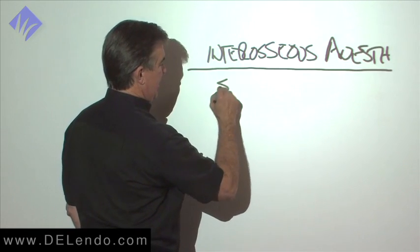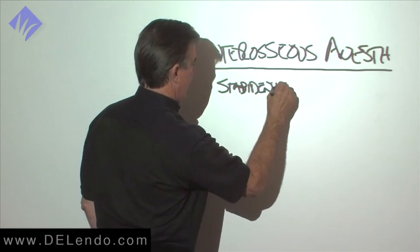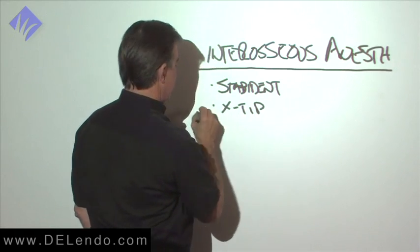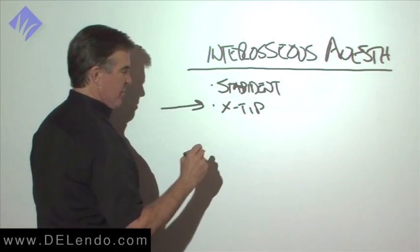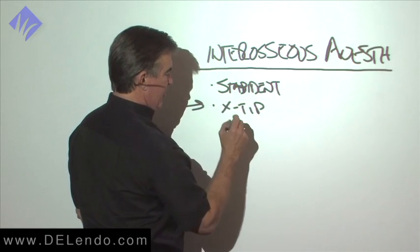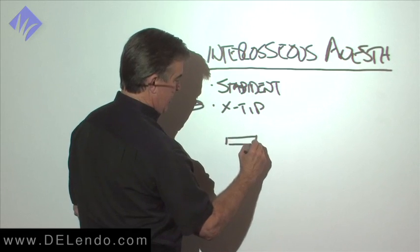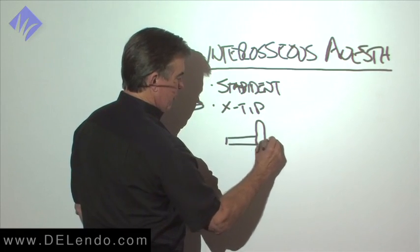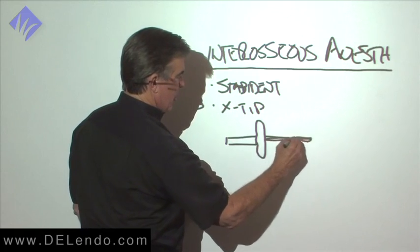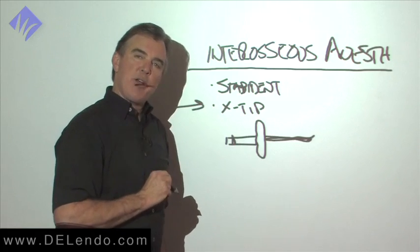So there are a couple of these. There is Stabident, which was the first one, and there's X-Tip. This is the one that I use. Since this came out, I don't think anybody uses that. Stabident was difficult to get the needle in the perforation through the cortical plate. X-Tip has a latch grip penetration device. It's a little tube that's cut at an angle at the end, and this is putting your slow-speed handpiece.